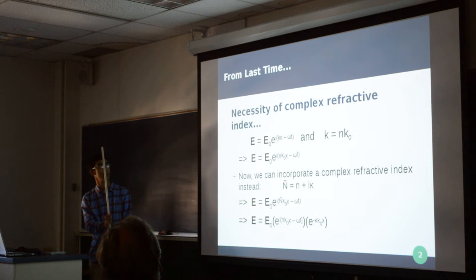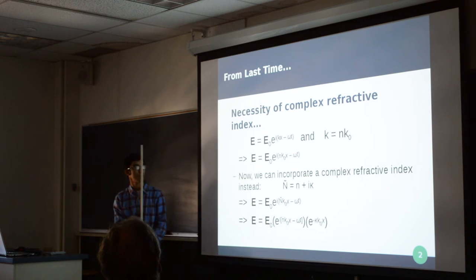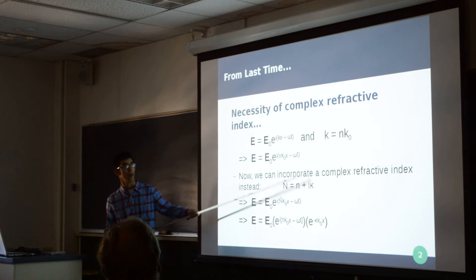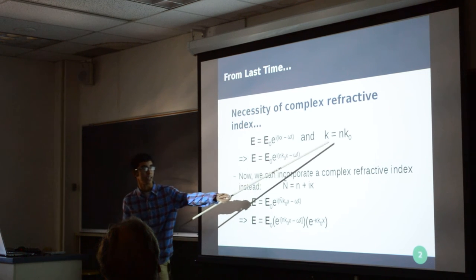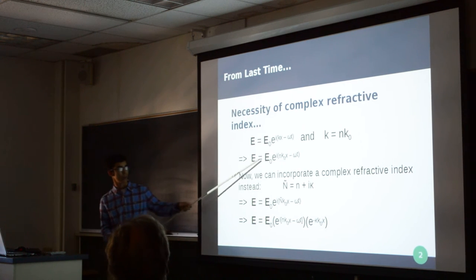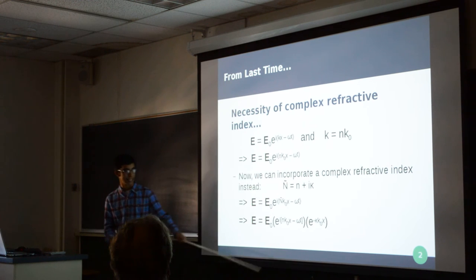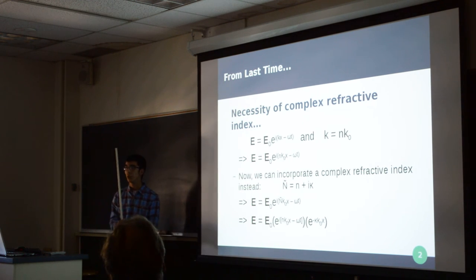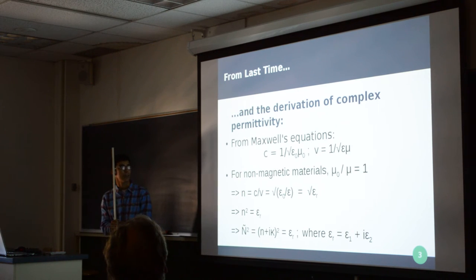So, from last time, basically what I did is I implied the necessity of a complex refractive index. Here we have the solution to the wave equation for an electromagnetic wave. And using this relation here, which we also derived, we see that we can imply the use of a refractive index. Now, this K is a wave vector in a medium while this K0 is a constant, the wave number in a vacuum. After we put this in, we can also change this to a complex value to accommodate for a decay as the light wave enters a medium from the vacuum.